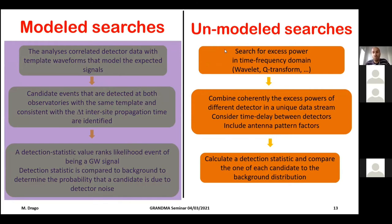A good approach is to combine different detectors coherently using the excess power — for example with a likelihood — to consider the information from multiple detectors in a coherent way. You then have your detection statistic, which is your decision rule, and comparing this against the time-shifted background gives you the significance of the detection.